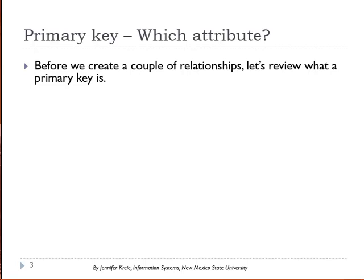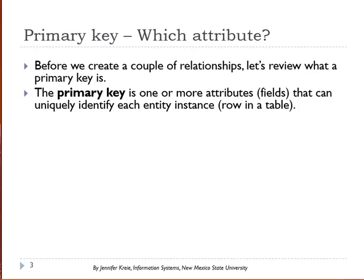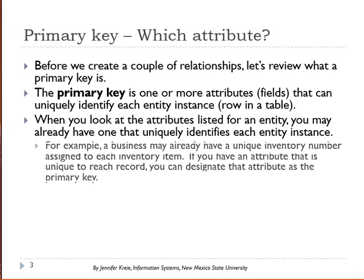Before we create a couple of relationships, let's review what a primary key is. This is one or more attributes or columns in a table that uniquely identify each row in the table — or in the data model, each entity instance. For example, a business might assign an inventory number to each inventory item, and that inventory number is unique to each item. If you have that attribute, you could designate it as the primary key.